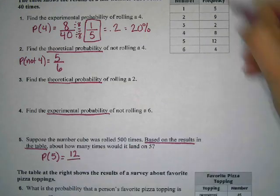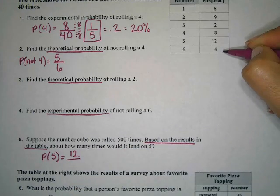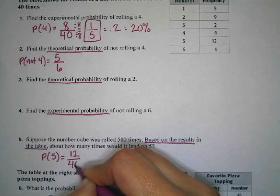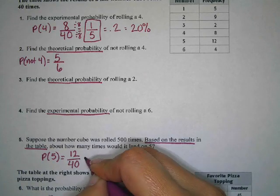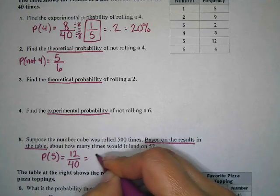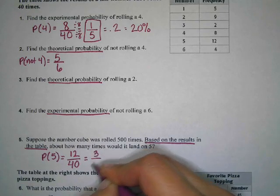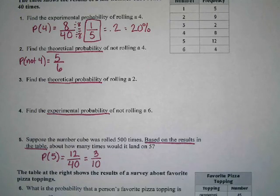In the table, we rolled 40 times total. So 12 out of 40. We can reduce that down by 4. Twelve divided by 4 gives me 3, and 40 divided by 4 gives me 10. So my probability of rolling a 5 based on my experiment is 3/10.